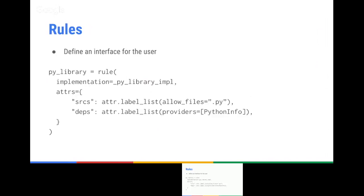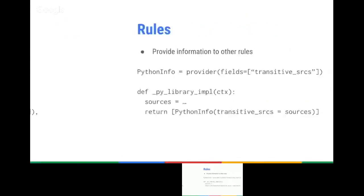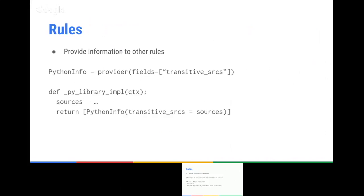Rules define an interface for the user. Here the interface says the rule has two attributes: sources and deps. The sources is a list of .py files, and the deps are targets that will provide a PythonInfo provider. This is really the interface of the rule — what the rule accepts. Your rule can also provide information to other rules, just like in the CC library example. Here we create a PythonInfo provider with one field, transitive_sources. You could have more attributes and document them using a dictionary with documentation for each attribute.